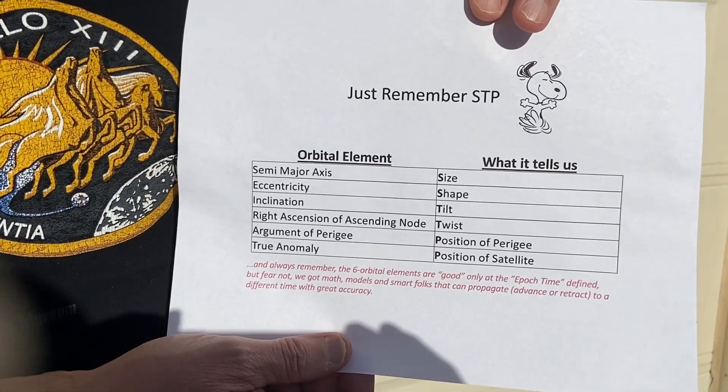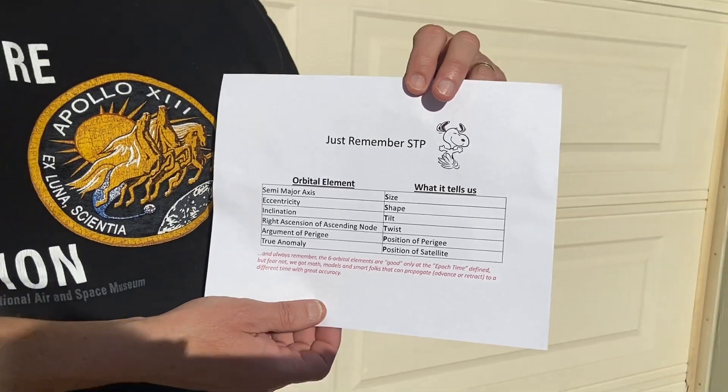Size, shape, tilt, twist, position of perigee, and position of satellite.